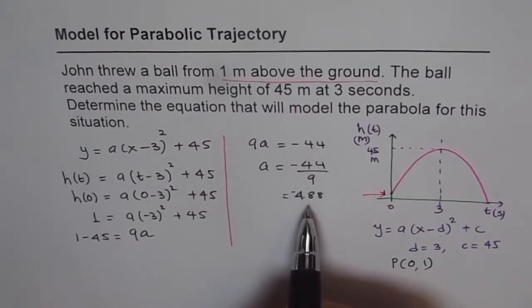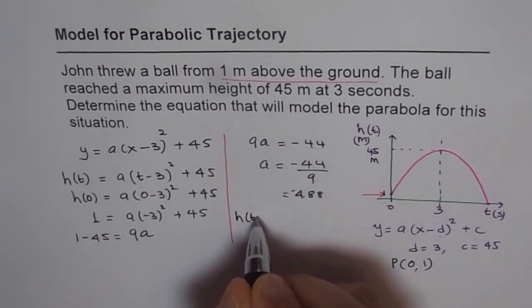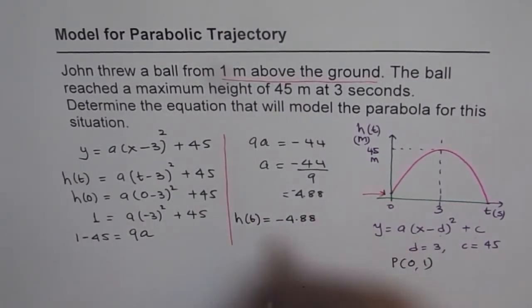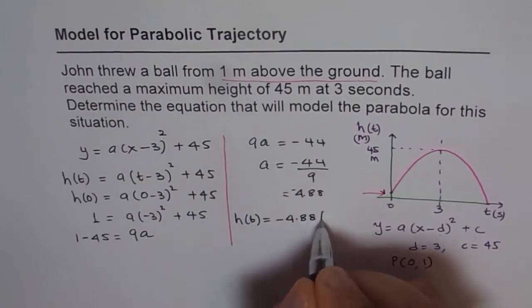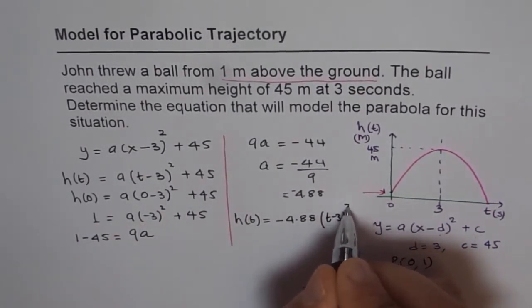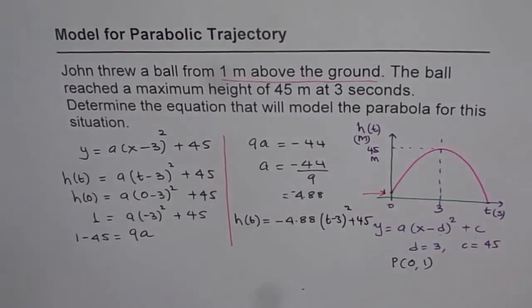Now once we find the value of a we can write down our function. So our function is h(t) equals minus 4.88 times (t minus 3) squared plus 45. Do you see that? So that becomes our answer.